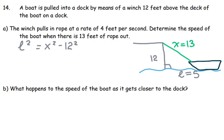And because L is changing, I'm going to differentiate over T. So I have d over dt of L squared and I have d over dt for X squared minus 144.